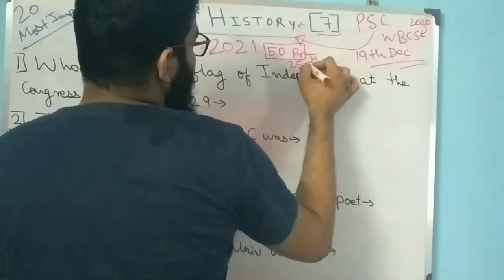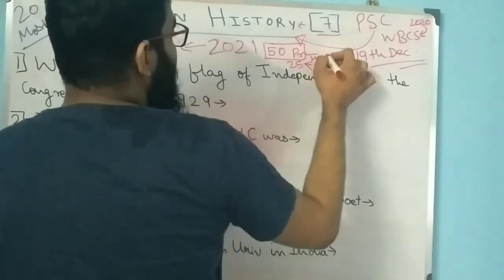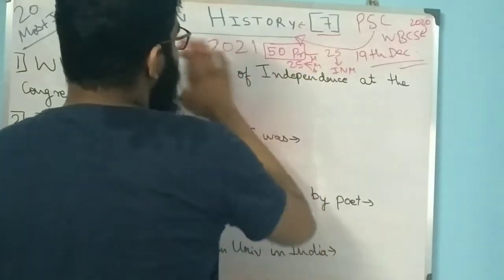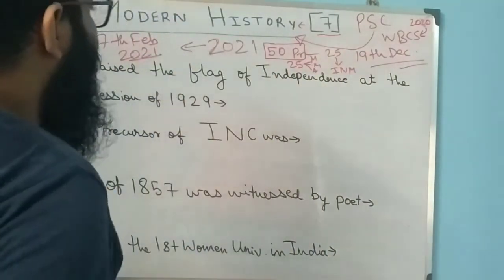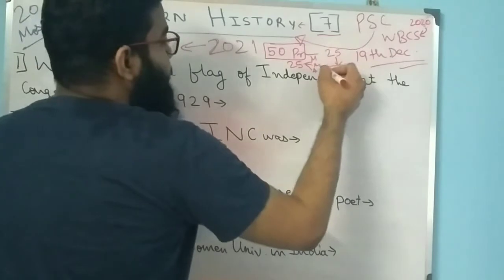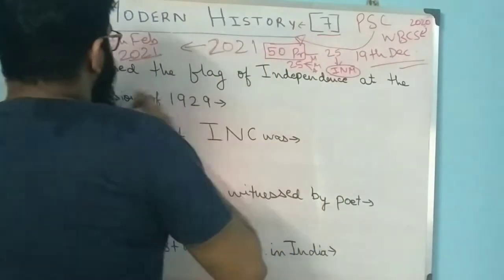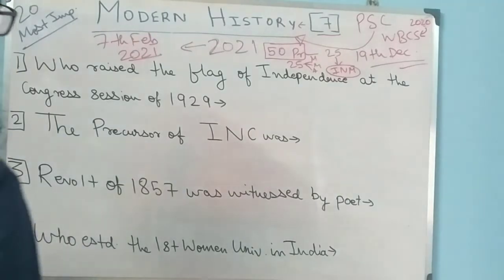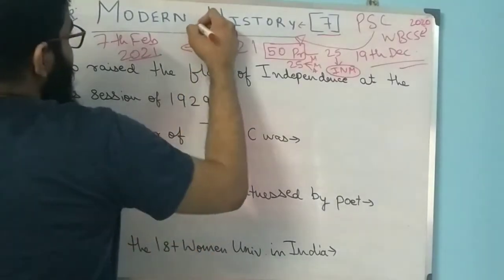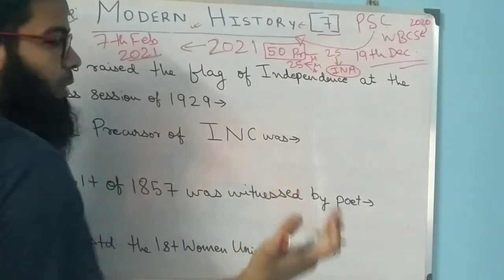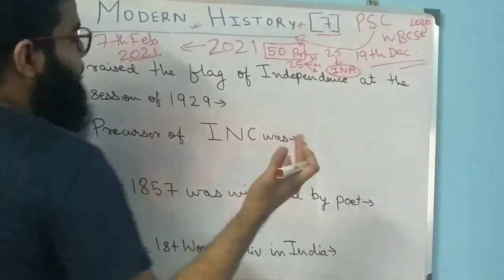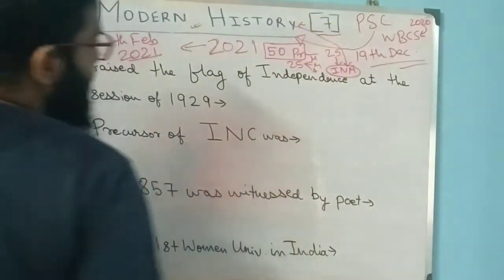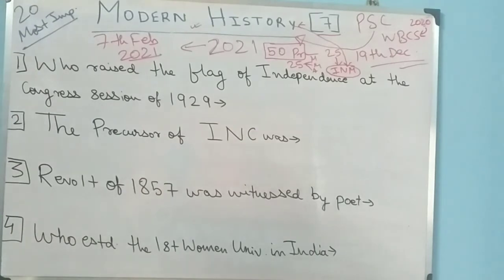Medieval and ancient history together make up 25 marks. The European starting portion mentions that the Portuguese came first - that is the starting portion of modern history. But the Indian National Movement (INM) is the biggest part, so I will keep most focus on the Indian National Movement.